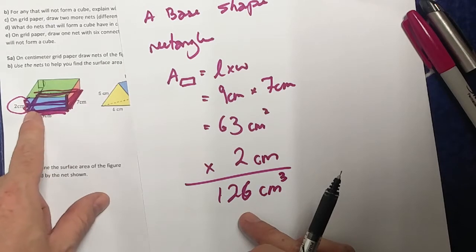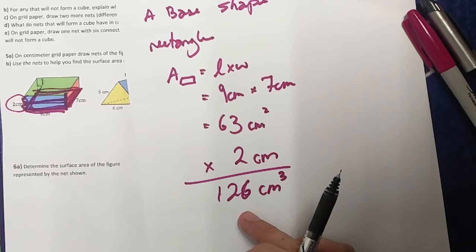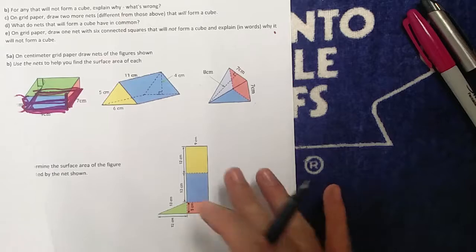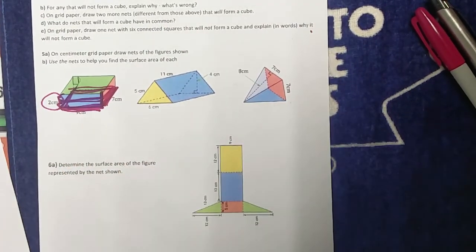I know that because I have 63 on the bottom, but I have 63 two times, which is the area times the height. Area of the base times the height. Okay, next video we'll do the same thing, but instead of a rectangular prism, we're going to be looking at the triangular prism.